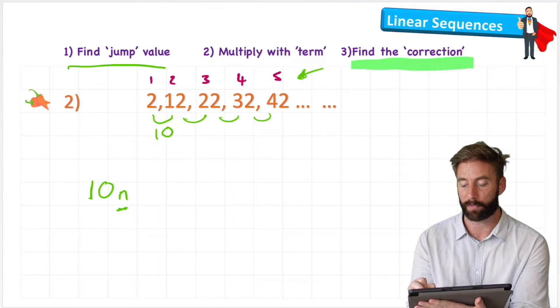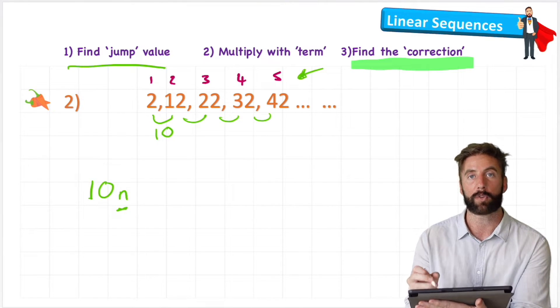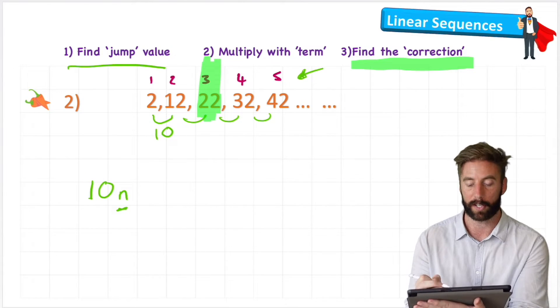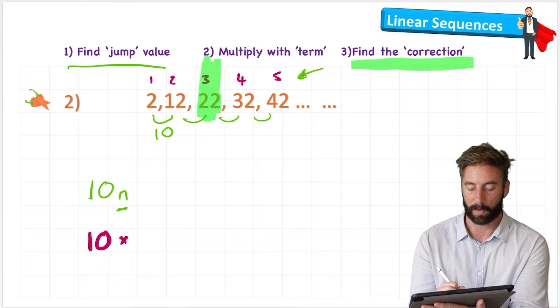So then we can do step three, which is to find the correction. And to find the correction, we're going to use an example, one that we've got. Let's use this 3. So 10 times 3 equals 30.